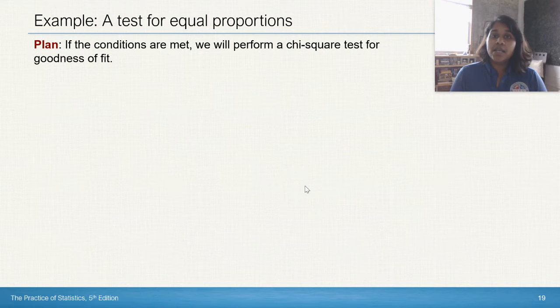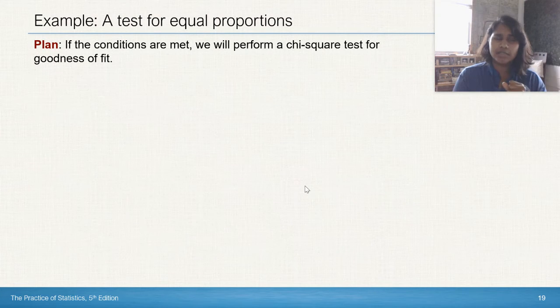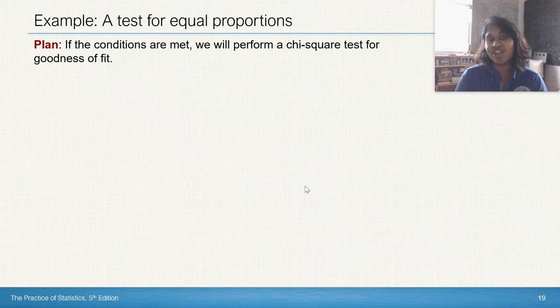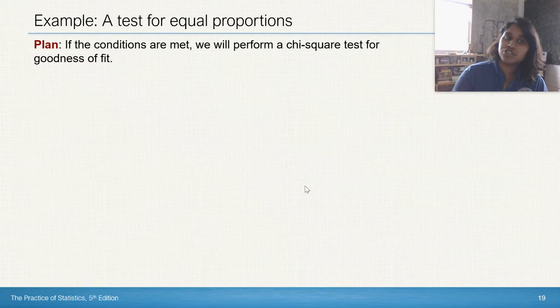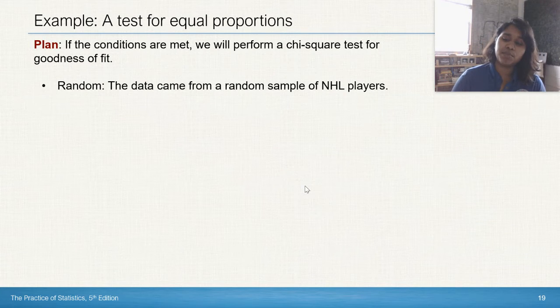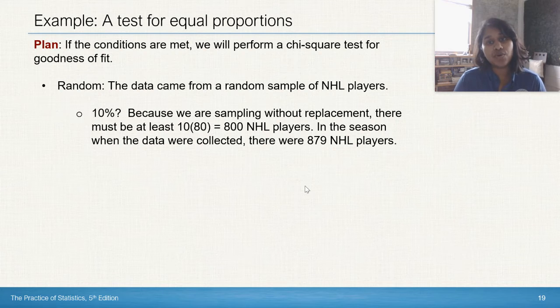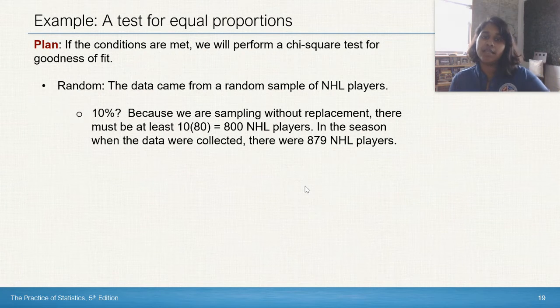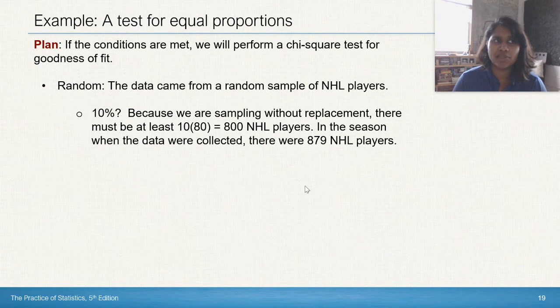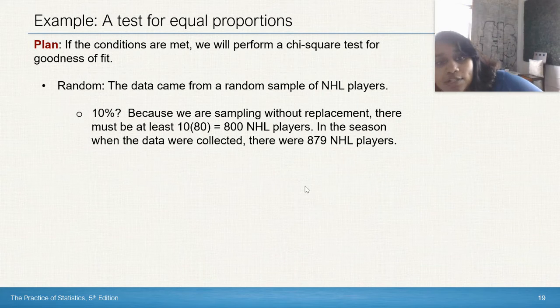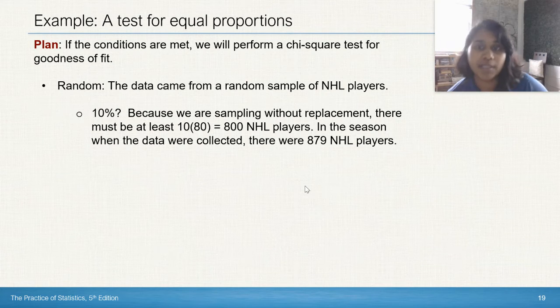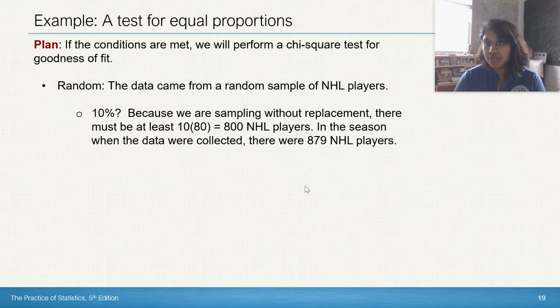The next thing to do is plan. We'll have to play this game. Name that test. But in order to name that test, we have to check our conditions. Our test is going to be the chi-square test for goodness of fit. And our conditions, we meet the random. Well, our data came from a random sample of NHL players. 10%. I don't know the original population. Eventually they gave it to us, but the one thing I could have done is did 10 times 80 and I could have made an inference whether or not I thought that there were more than 800 NHL players in the NHL roster. But so they did tell us that there were actually 879 NHL players in that season. So it really was less than 10%. So we're good to go there.